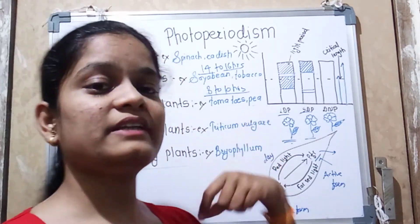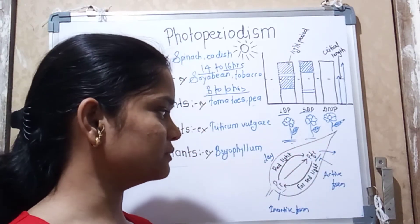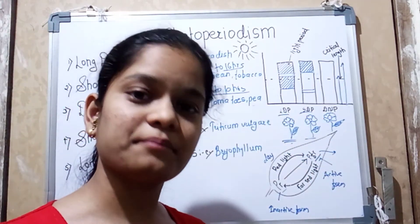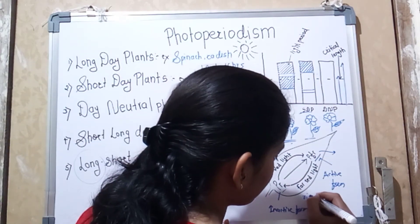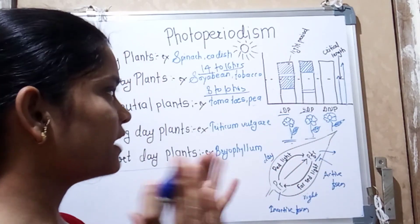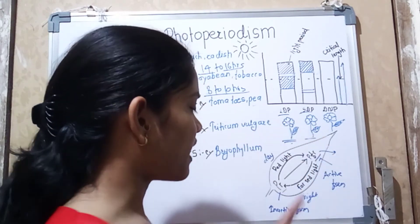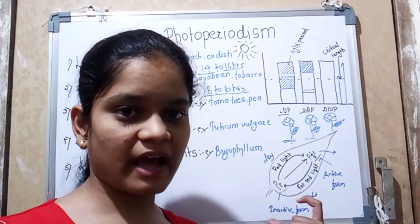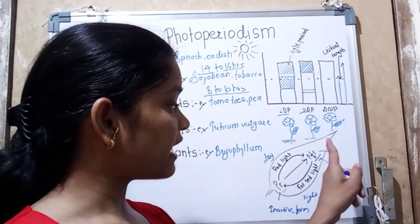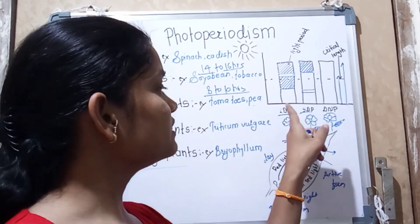During the daytime, all the inactive PR is converted into active PFR by absorbing red light, and this leads to flowering in long day plants. During the night, PFR is converted back into PR. However, in long day plants, where the night is short, the PFR is not completely converted back into PR. The large remaining amount of active PFR leads to flowering in long day plants.